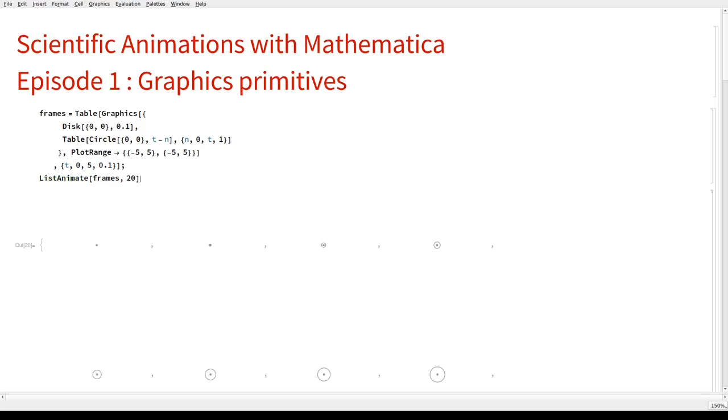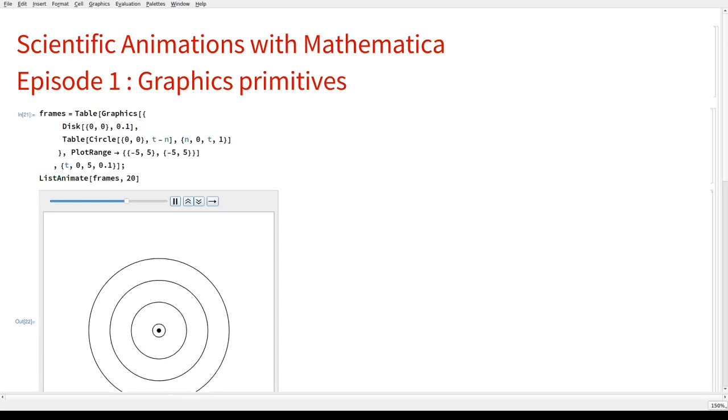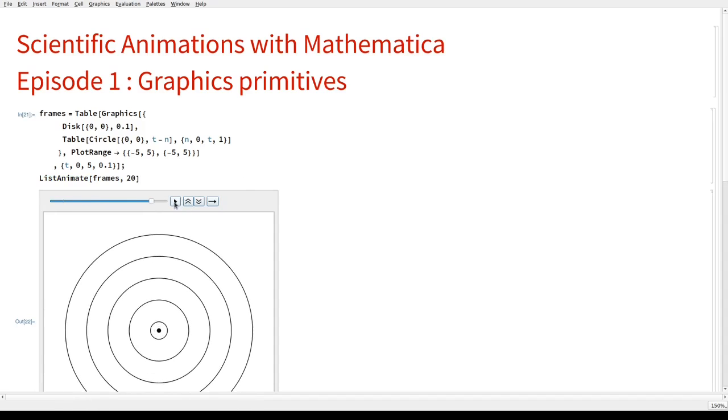ListAnimate, with 20 frames per second. Again, this is adjustable. This is a good starting point. We don't have a lot of frames, but things are going in the right direction.